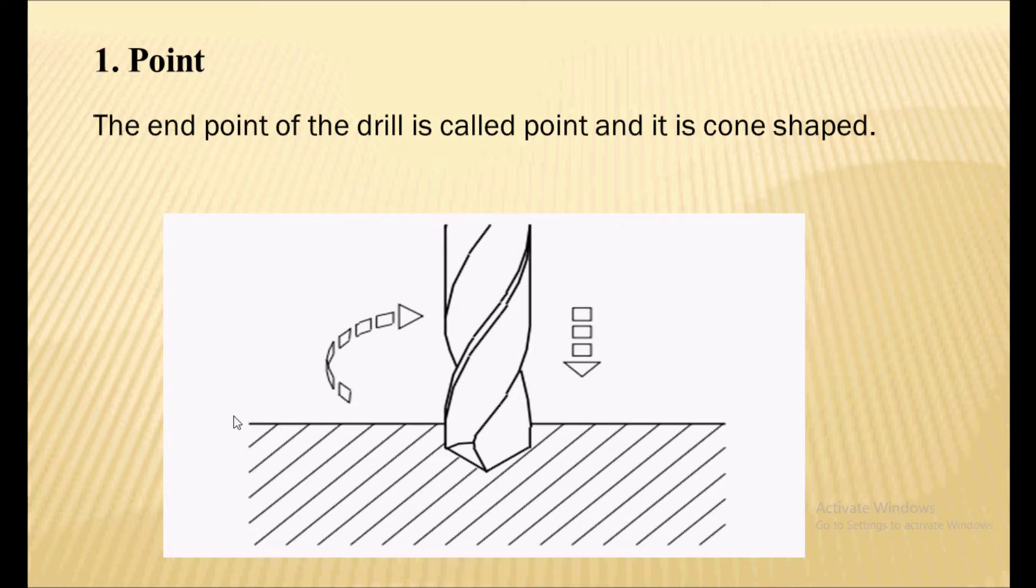So let's discuss the parts of the drill bit. First, the point. The end point of the drill is called the point, which is conical in shape. This end point is called the point in the drill bit, which actually does the cutting of the hole.